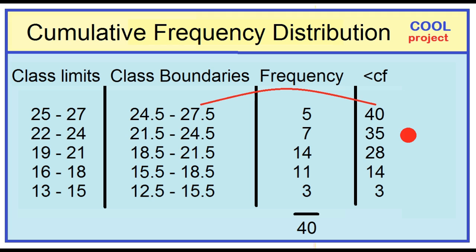35 women each had a boyfriend when they were less than 24.5 years of age. 28 women each had a boyfriend when they were less than 21.5 years of age. 14 women each had a boyfriend when they were less than 18.5 years of age, and three women each had a boyfriend when they were less than 15.5 years of age.